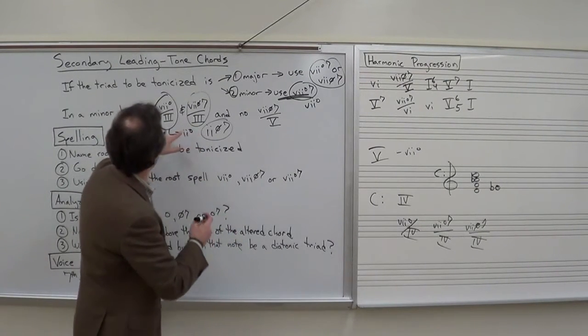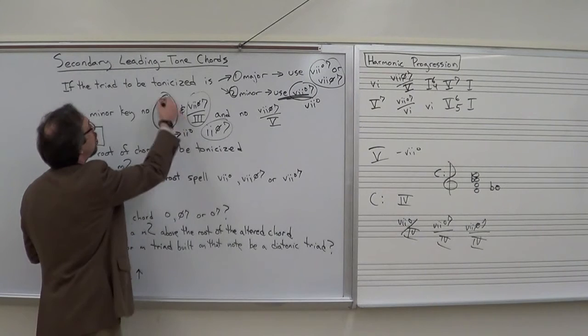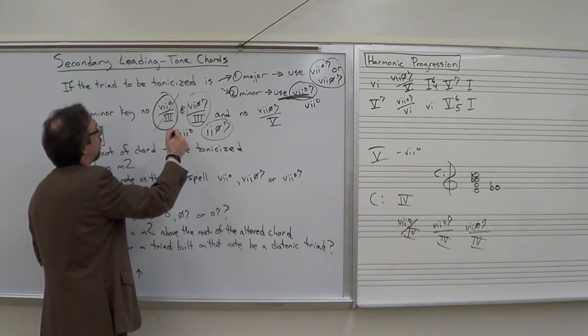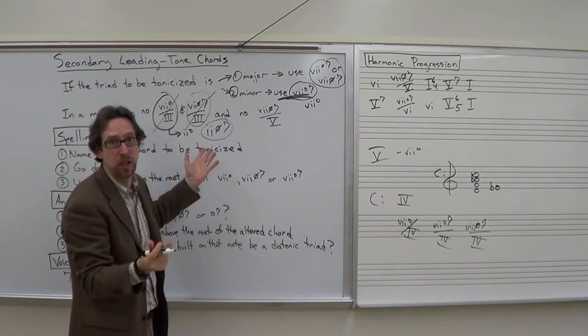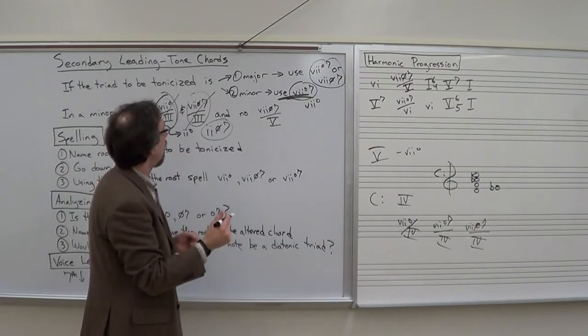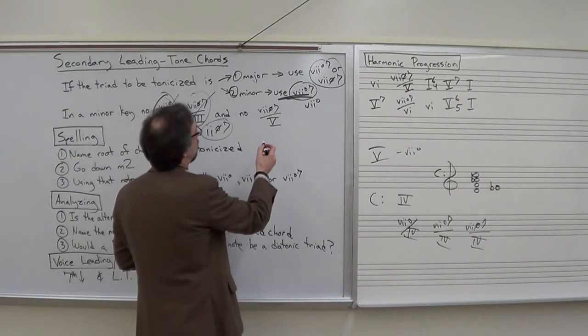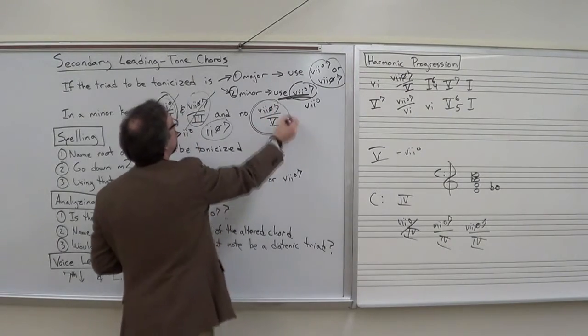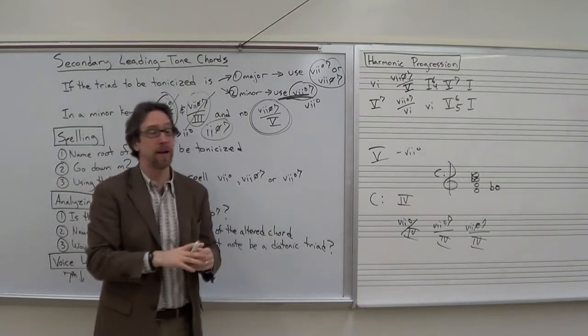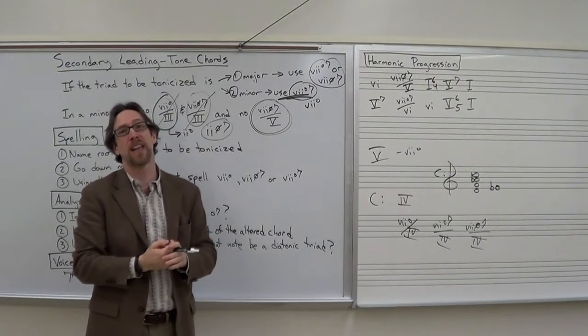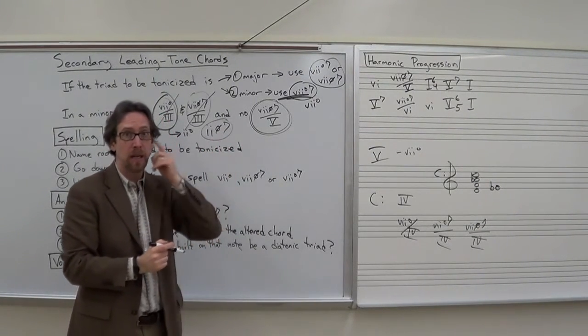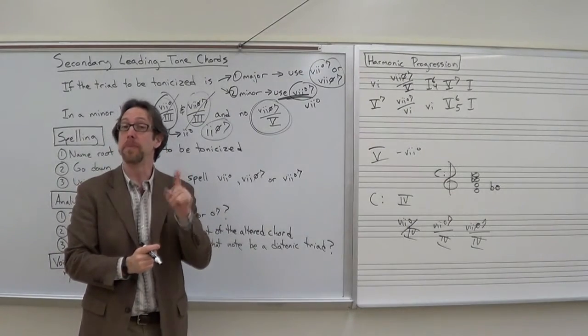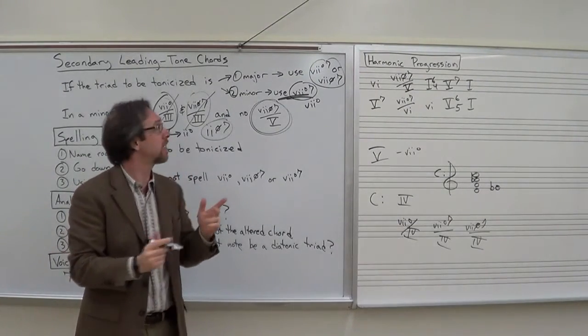You have to label it based on its function. So we have in a minor key no 7 diminished of 3 or no 7 half diminished of 3 because they essentially are 2 chords. The other thing that we don't have, which is a little unusual, takes a second to think about it, is we don't find 7 half diminished 7 of 5 in a minor key. We do find it in a major key but not a minor key.